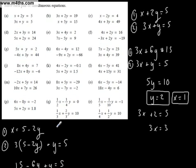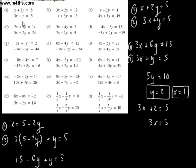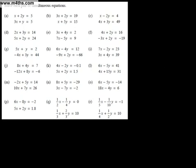On that example, I could have done anything I liked. I could have made y the subject of the bottom one. If I'd made y the subject of the bottom one, equation two would be y equals 5 minus 3x. Now I can feed that into equation one every time I see a y. So x plus 2y, well y is now 5 minus 3x, equals 5.